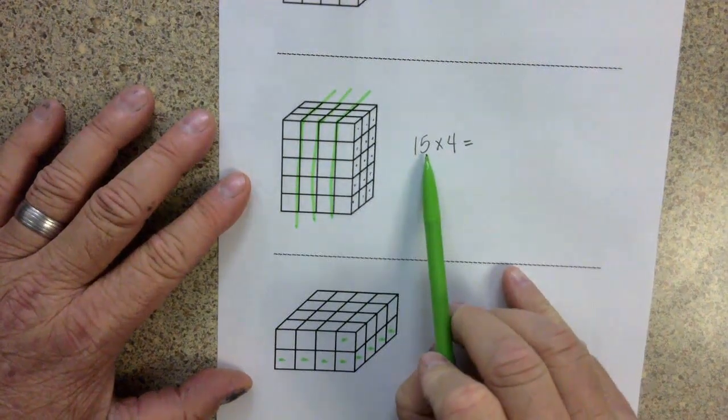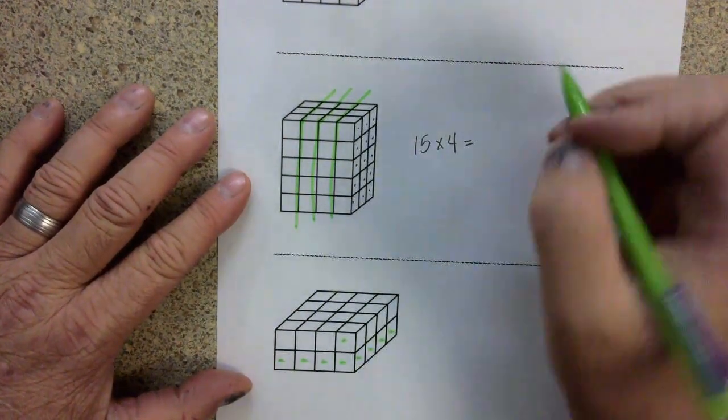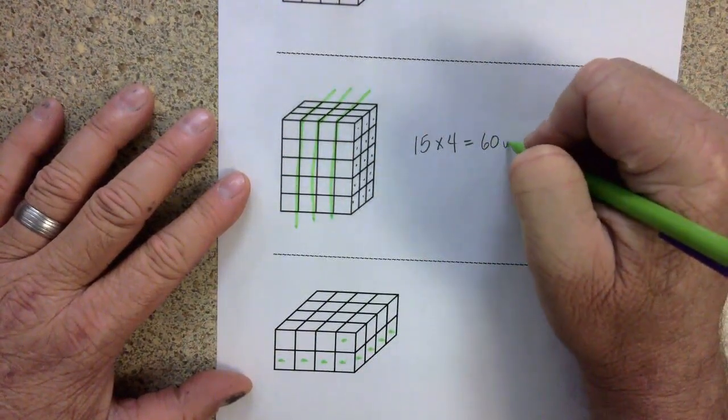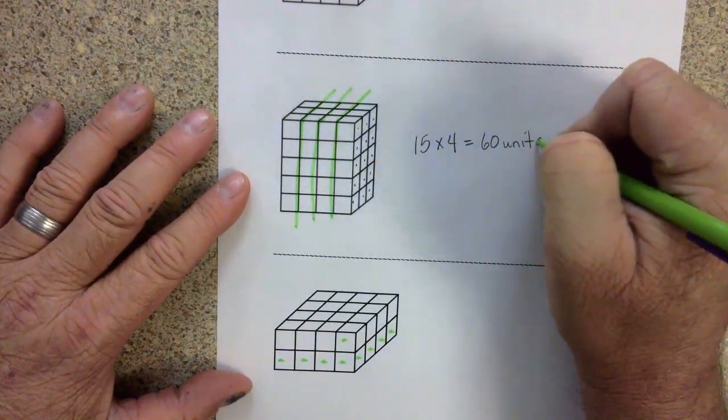I know that 15 times 2 is 30. So 15 times 4 is 60. And again, that's cubic units or units cubed.